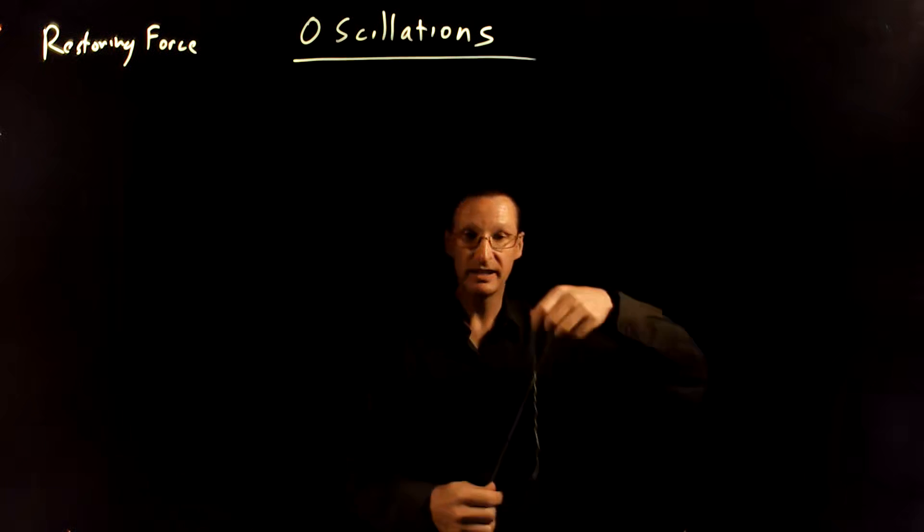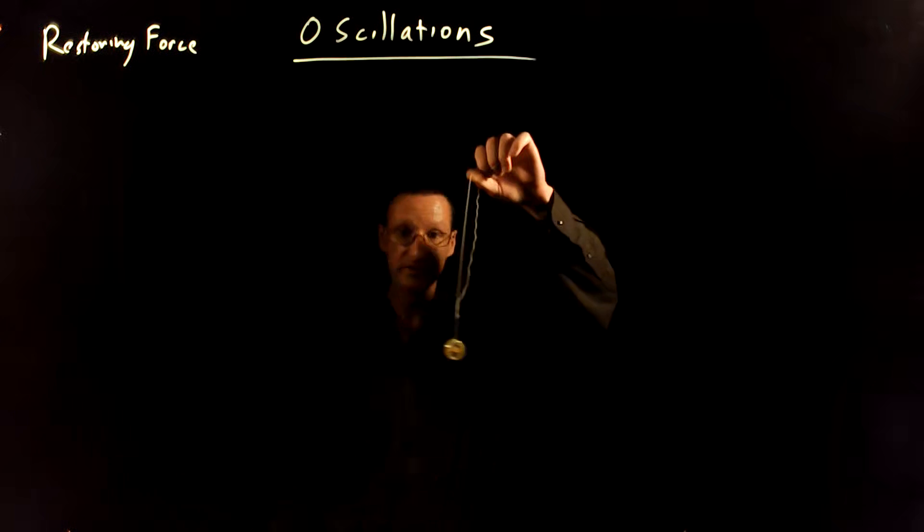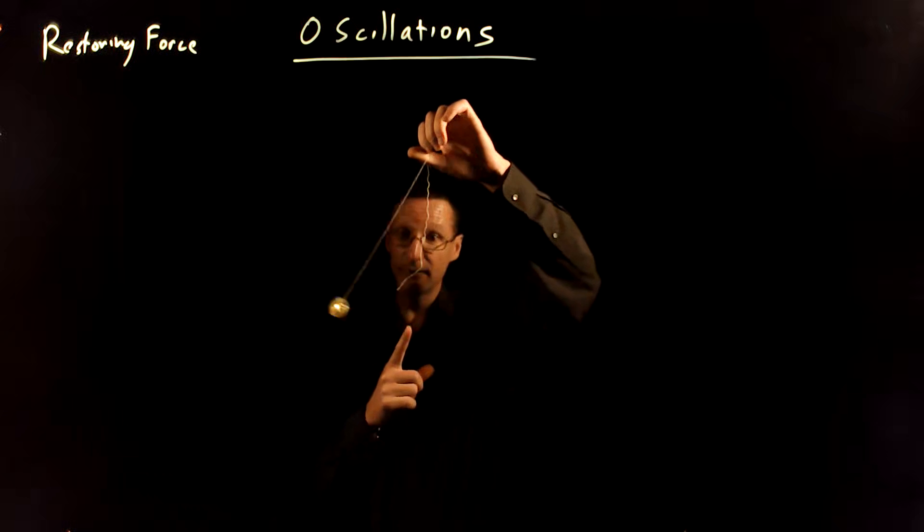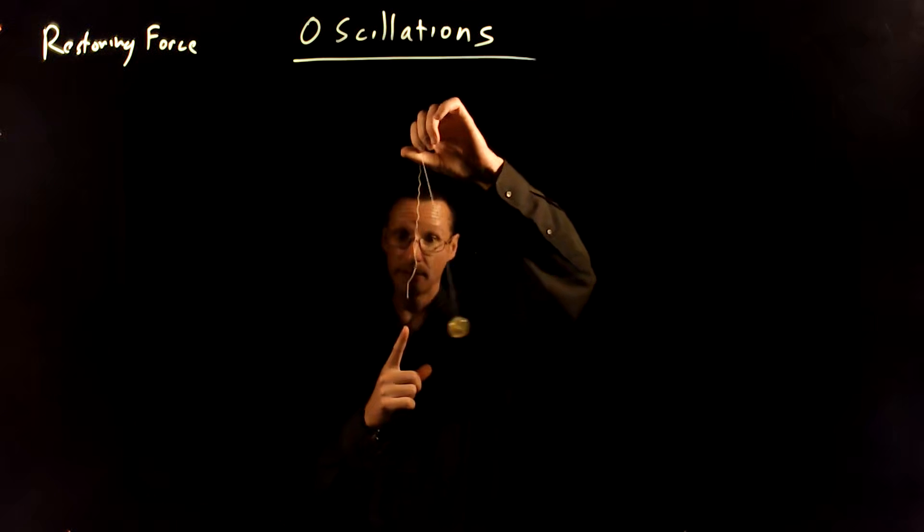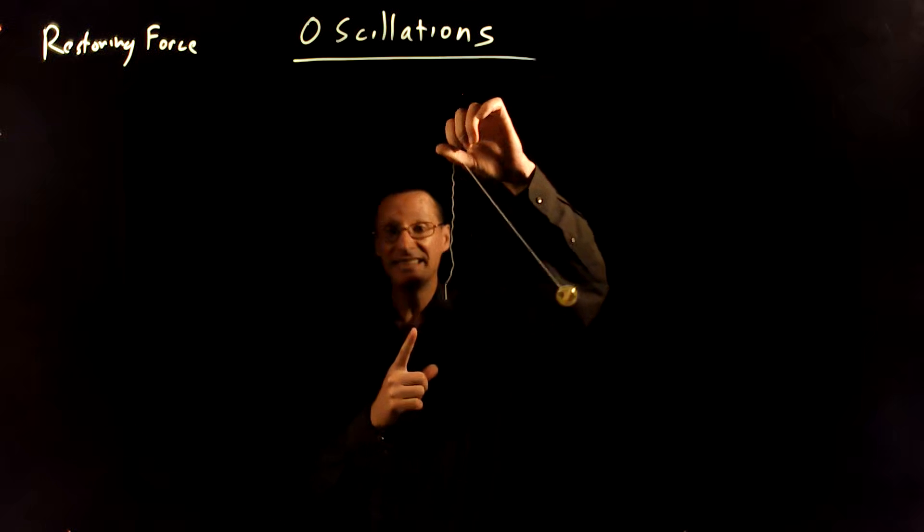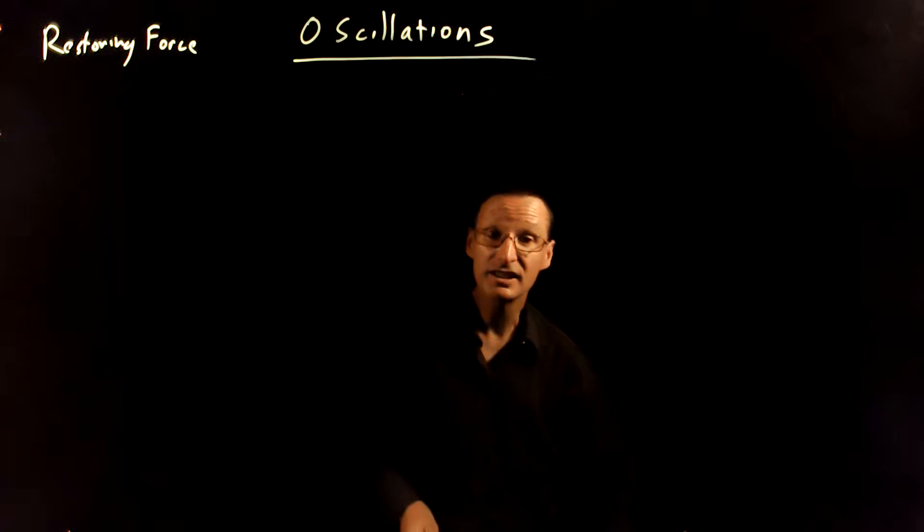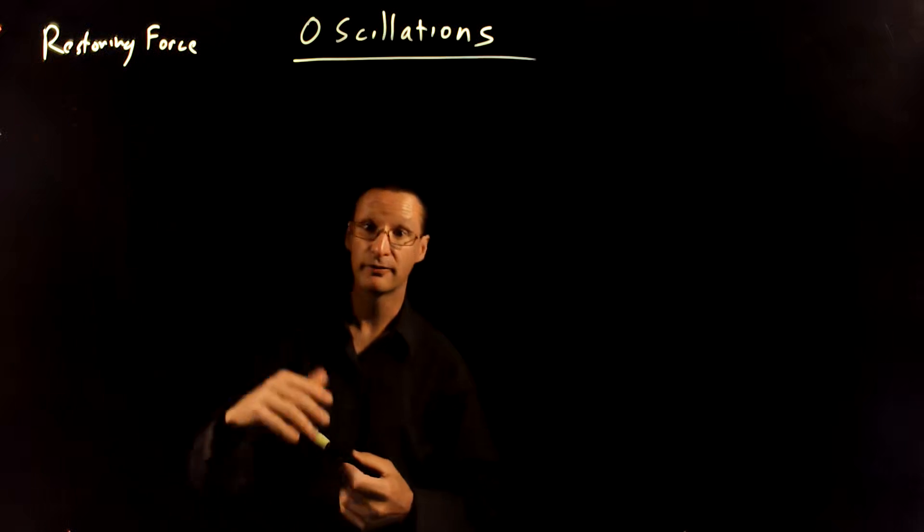Well, a simple example would be if I have this yo-yo here and I swing it back and forth. Gravity is pulling it back towards the center every time it deviates from some angle away, and so it's trying to get back to its equilibrium position. So this is an oscillation or a repetition of the motion due to a restoring force.